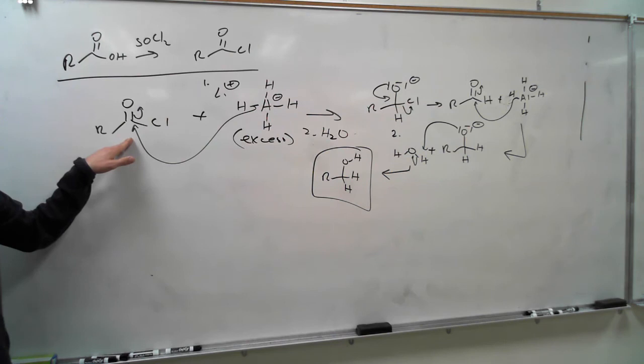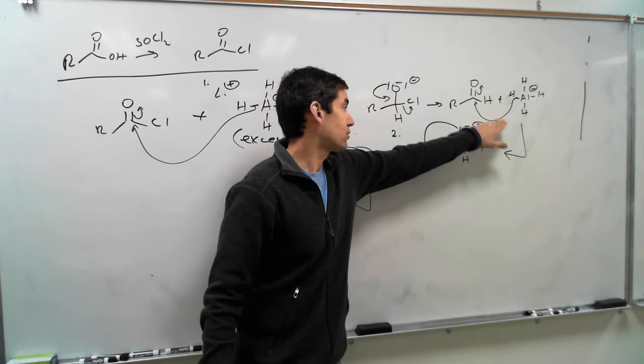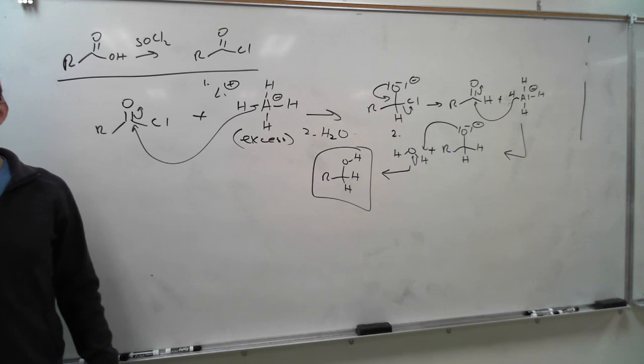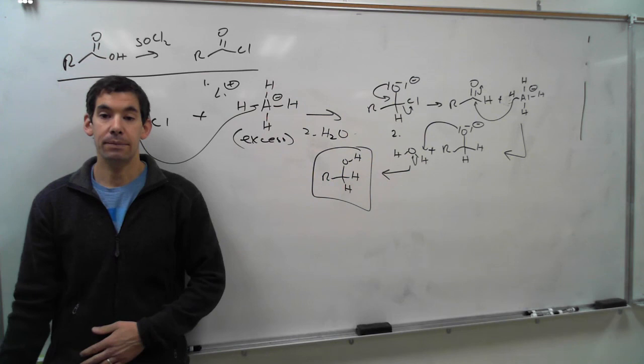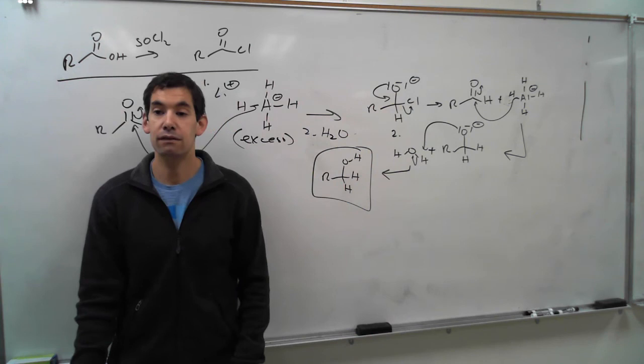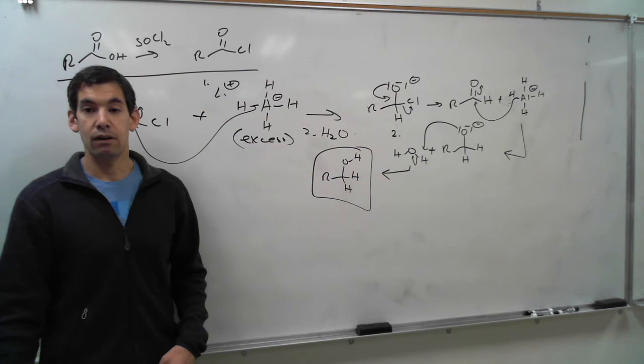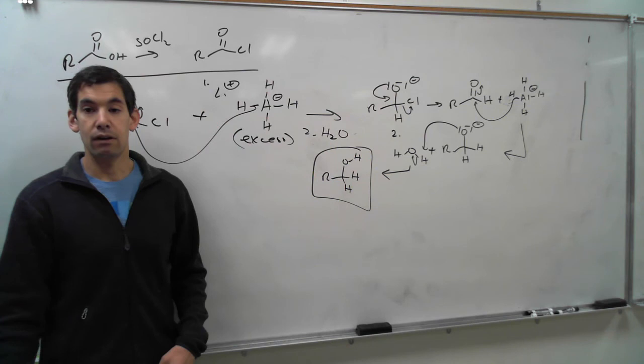We've made a primary alcohol. We started with the acid chloride, had one addition of lithium aluminum hydride, then a second addition of lithium aluminum hydride to give us our primary alcohol. That's another reaction — we've now gone over four different reactions with our acid chloride: to carboxylic acid, ester, amide, tertiary alcohol via Grignard, and primary alcohol via LiAlH4. The acid chloride is very versatile. In future videos, we'll talk about other carboxylic acid derivatives.